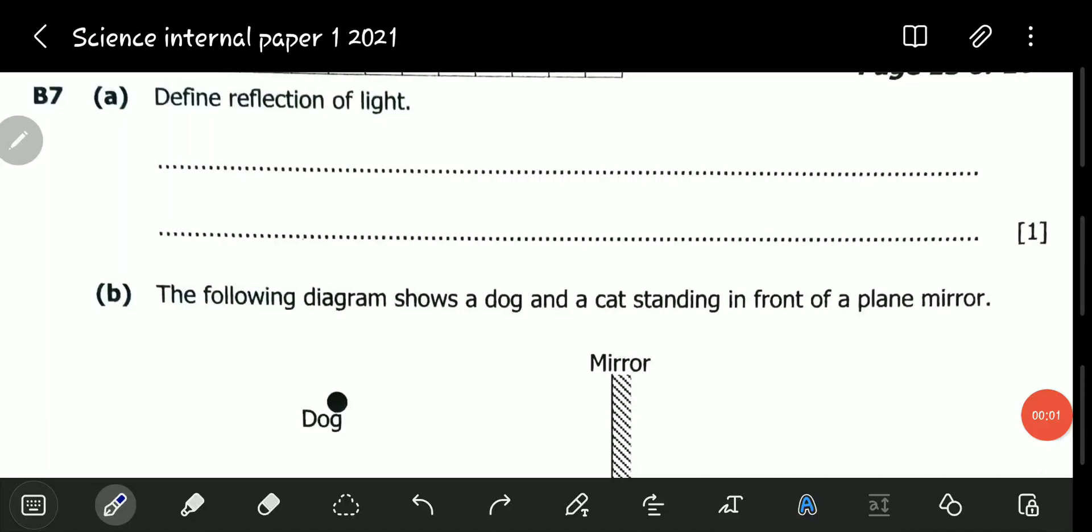Hello viewers, welcome to another exciting video. In this video, we will be looking at the November 2021 Science Paper 1, question B7. Question B7a reads, define reflection of light.